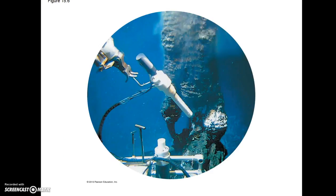This is a picture of an instrument on the research submarine Alvin that is sampling the water around a hydrothermal vent. This hydrothermal vent is about a mile below the ocean surface. This environment, which is very dark, hot, and under high pressure, is among the most extreme in which life exists today.